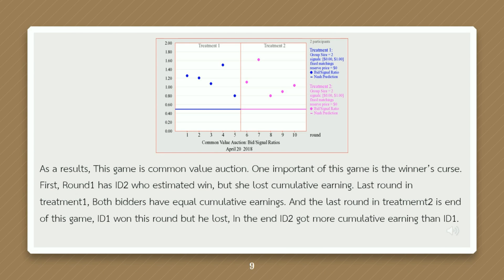This game is a common value auction, and one important feature is the winner's curse. In round one, ID 2 estimated to win but she lost. In the last round of treatment one, both bidders have equal cumulative earnings. In treatment two, ID 1 won the round but lost in the end — ID 2 got more cumulative earnings than ID 1.